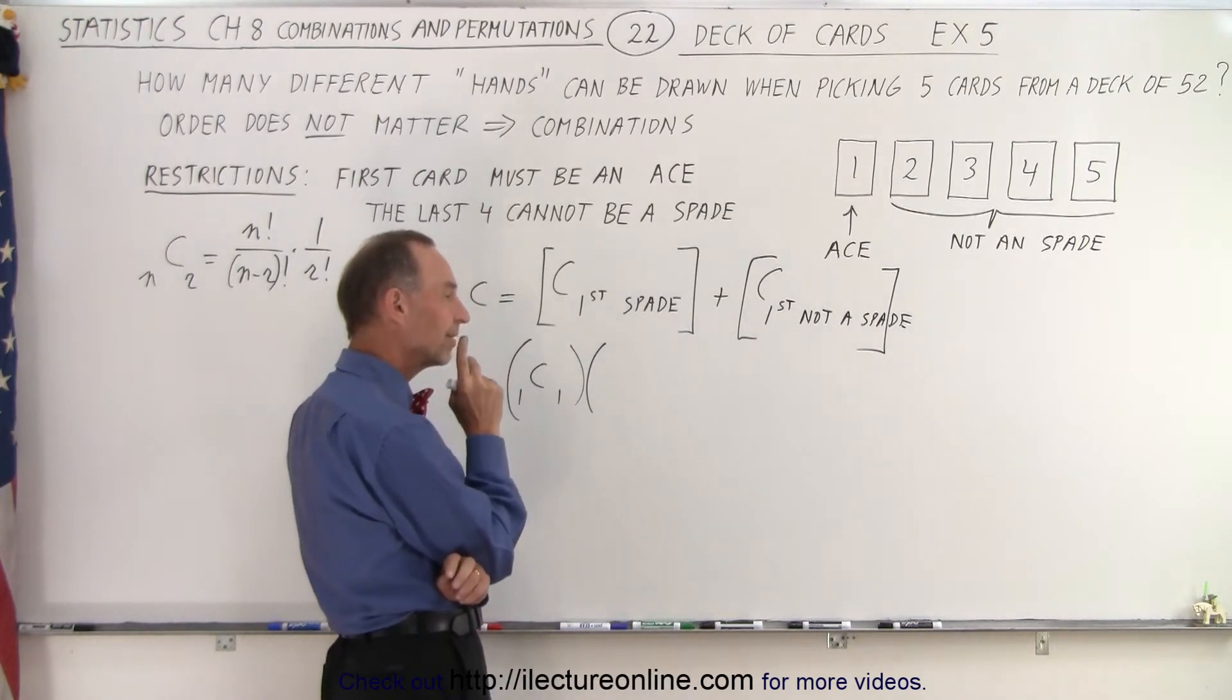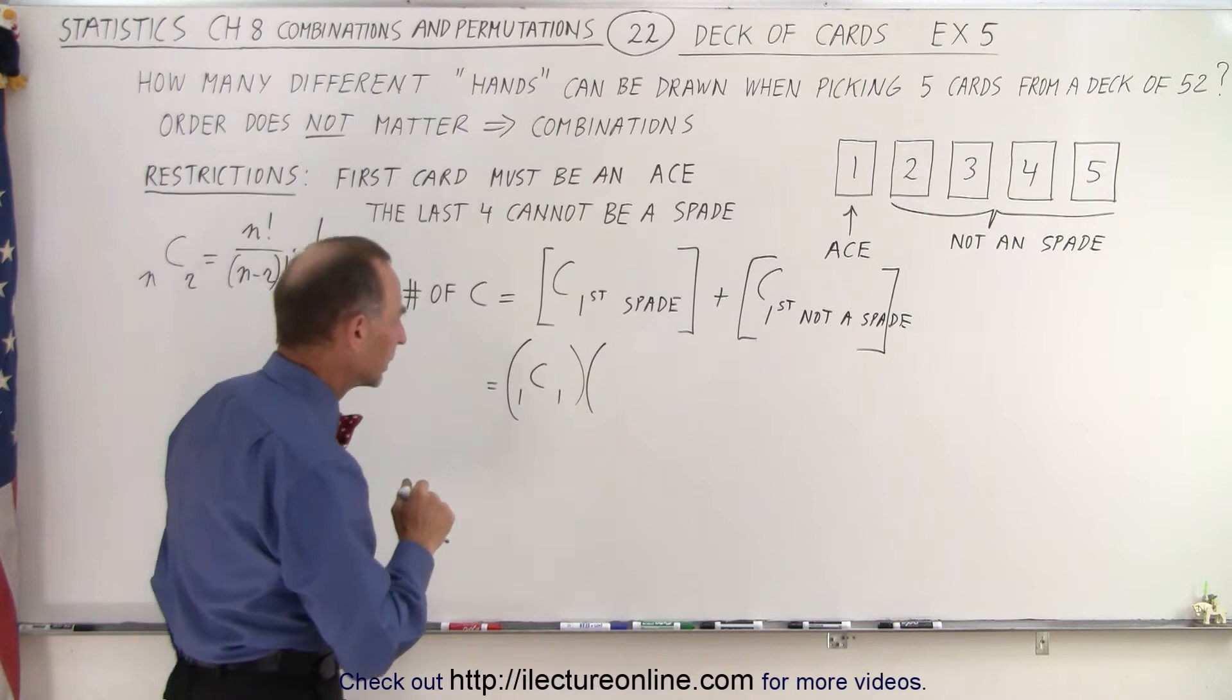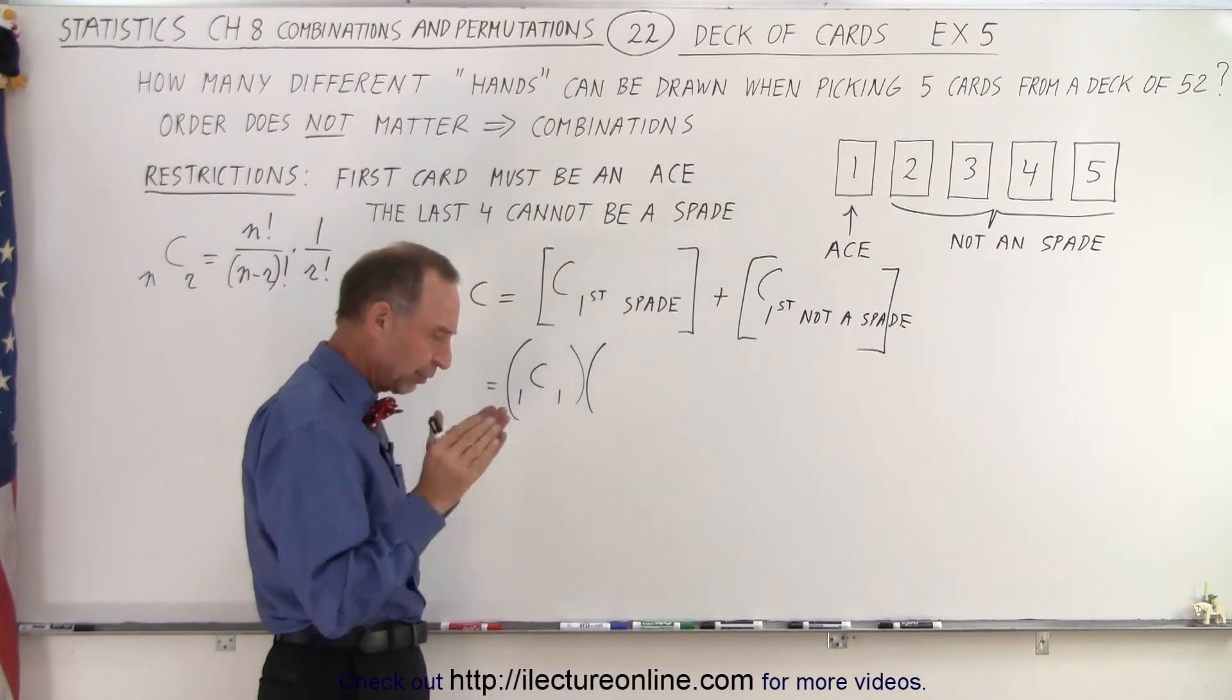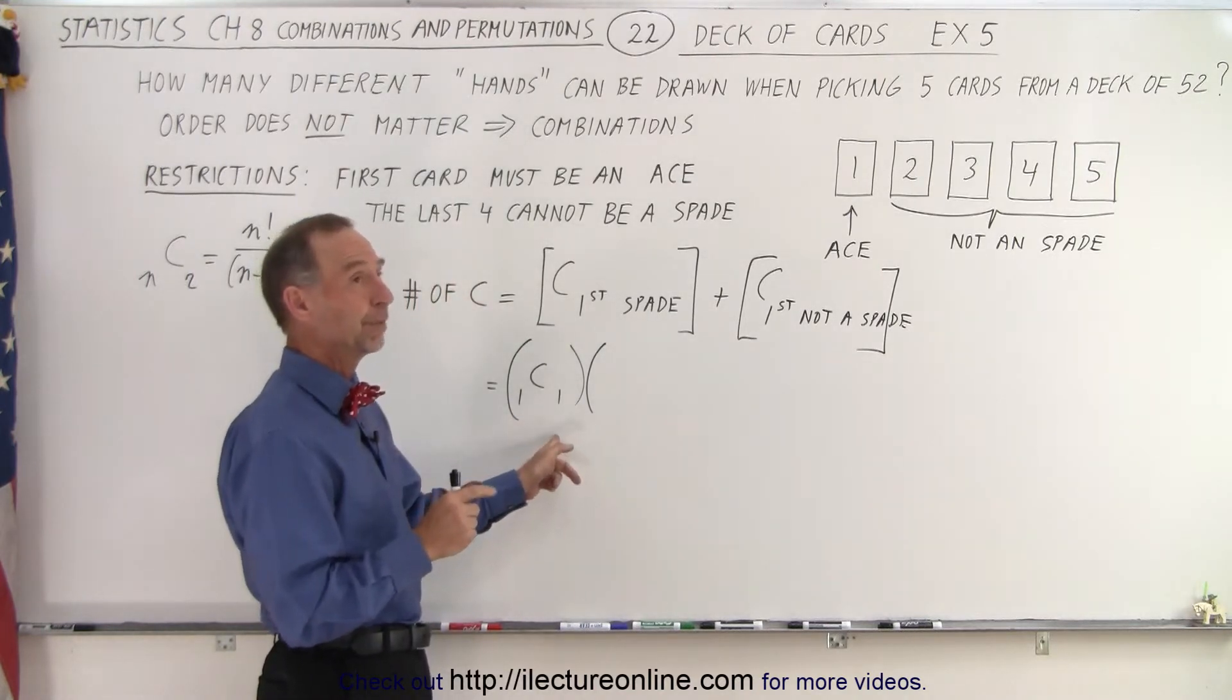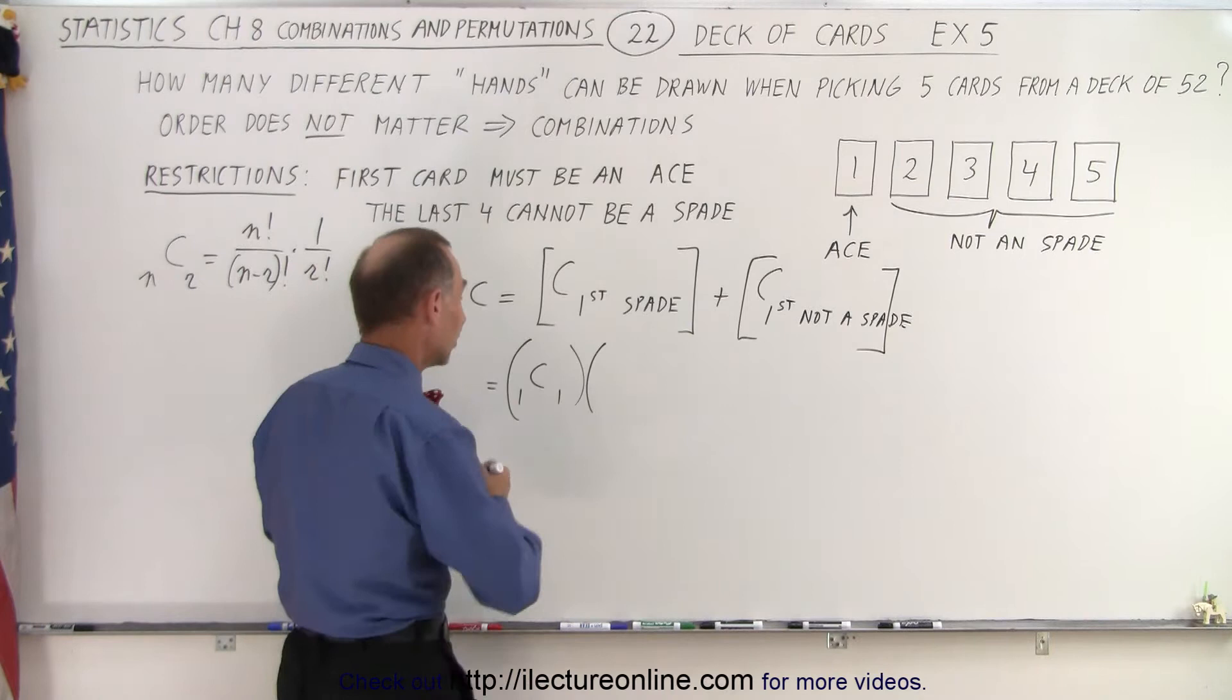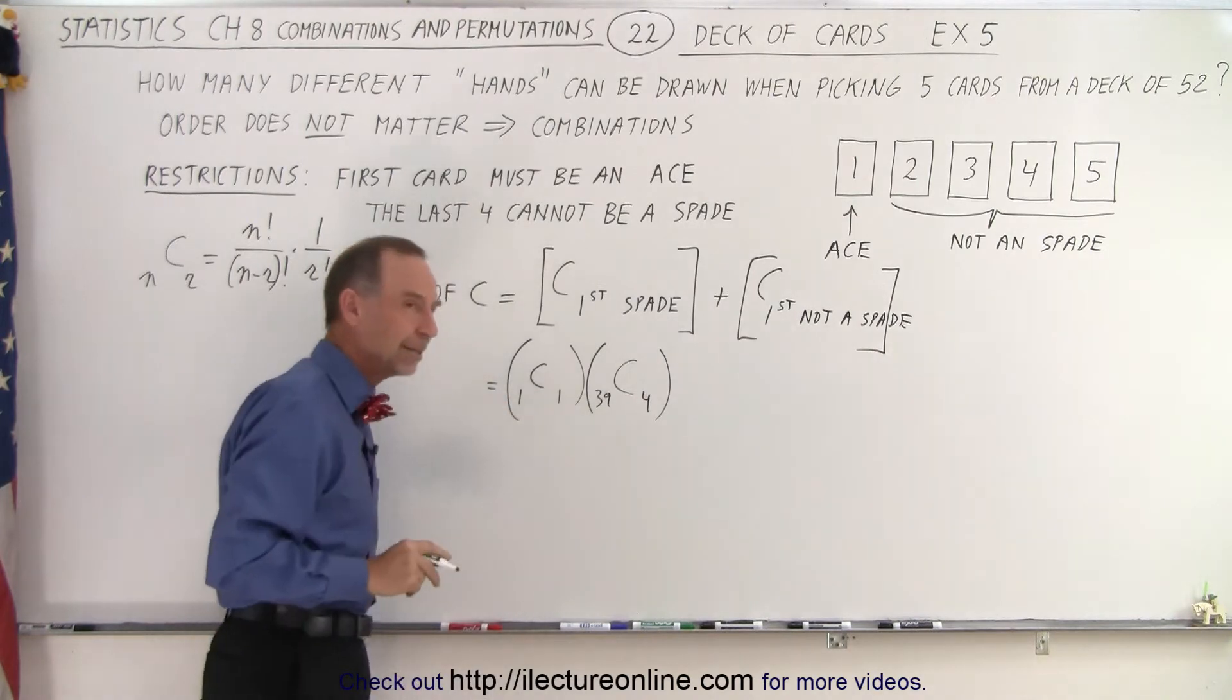Let's think about that one. How many cards do we have left? We have 51 cards left. And of those 51 cards, 12 are spades because we already picked one. So 51 minus 12 gives us 39 cards to pick from that are not spades. So in this case, it will be 39 cards to pick from, and we're going to pick four. That's provided the first card we picked was a spade.